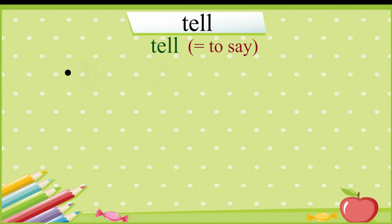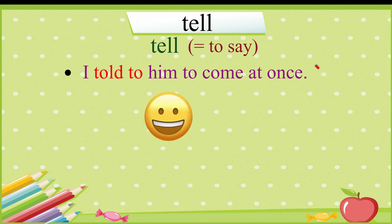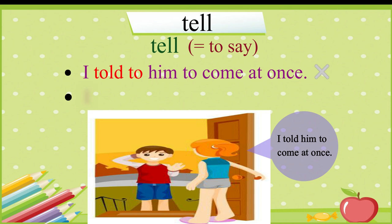Like for example, I told to him to come at once. This is not correct. I told to or I will tell to her. Such usage is incorrect. Please repeat the correct sentence after me. I told him to come at once.